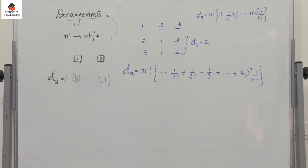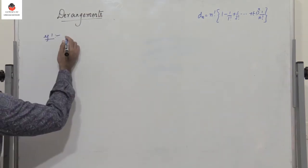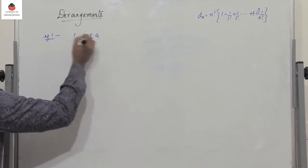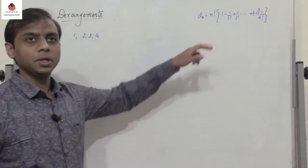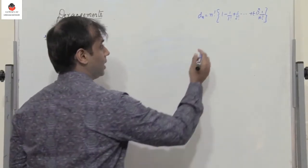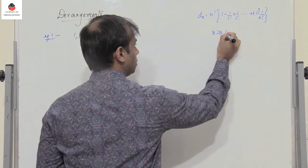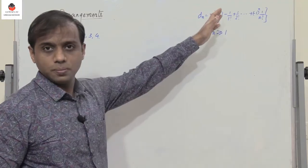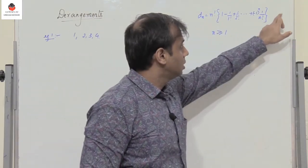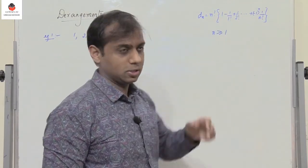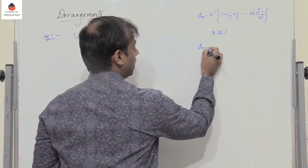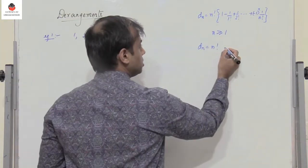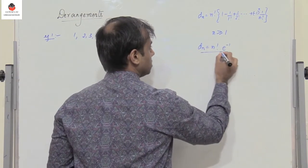Let us take a few examples. Find the derangement of 1, 2, 3, and 4. We will use this formula, with the condition that n is greater than or equal to 1. Now what happens if n becomes very large? Can this be approximated to a value? Yes, of course.